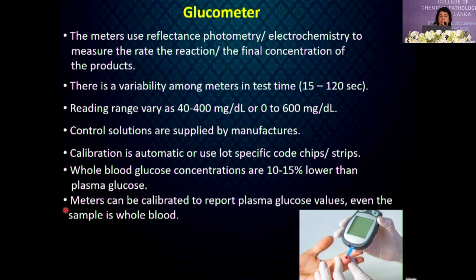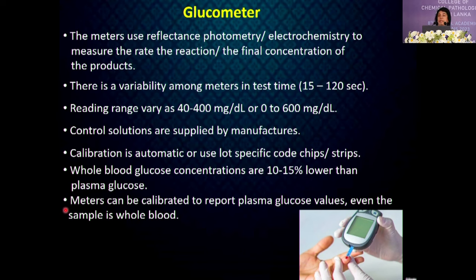Glucometers use reflectance photometry or electrochemistry to measure the rate of reaction or final concentration of product. Testing time and reading range vary between glucometers. The manufacturer provides a control solution, and calibration is automatic or uses lot-specific code chips or strips. Always remember that whole blood glucose concentration is 10 to 15% lower than plasma glucose, due to the water content of plasma being approximately 11% higher than whole blood. Glucometers can be calibrated to report plasma glucose values even when the sample is whole blood.